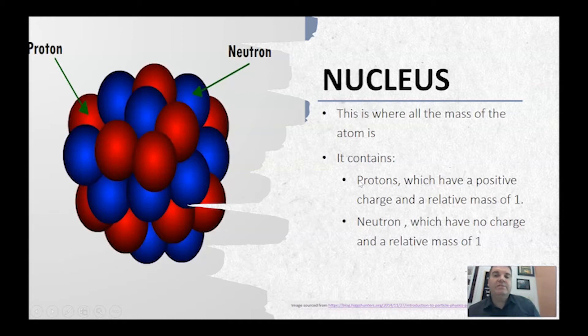So the nucleus is where the mass of an atom is. It contains protons which have a positive charge and a relative mass of one. Now that doesn't mean they weigh one gram or anything like that. When we say relative mass, it has to be relative to something else. So protons which have a relative mass of one weigh the same as a neutron which has a relative mass of one.